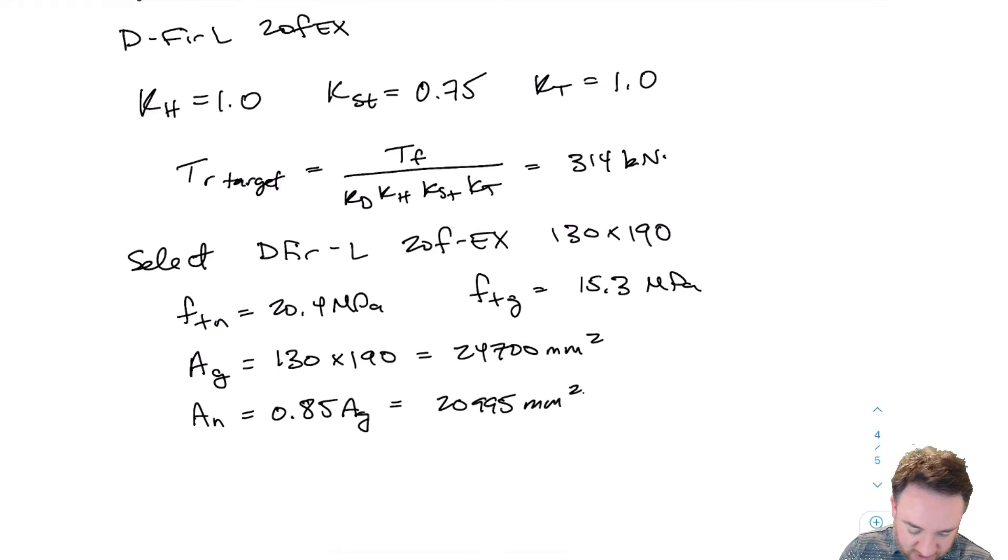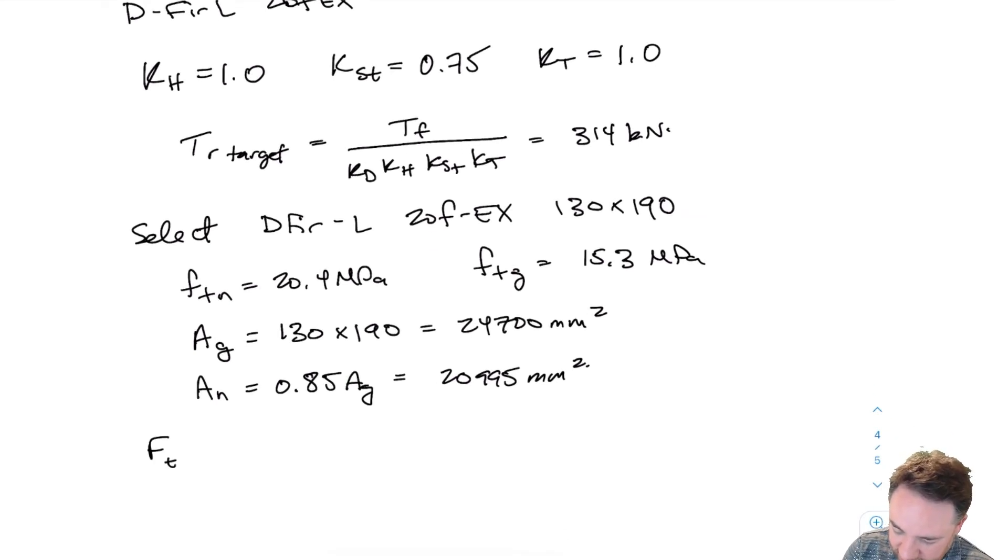Now I can figure out capital FTN and capital FTG. This is small ftn times KD times KH times KST times KT, and this is going to equal 13 MPa. In this case, the only reduction that I have basically is my KST of 75 percent. And this is FTG times KD, KH, KST, KT, which equals 9.7.